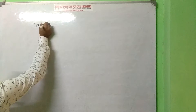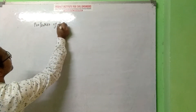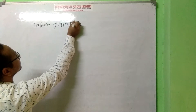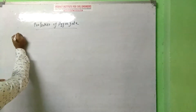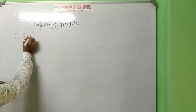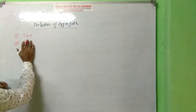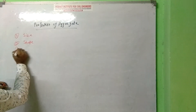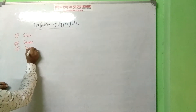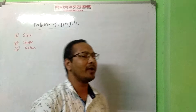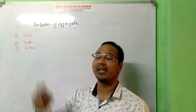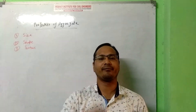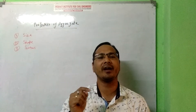Now let's talk about properties of aggregate. We have already discussed properties of aggregate in detail; we will provide a link in the description. Regarding size, the size of aggregate is divided into 3 categories: coarse aggregate, fine aggregate, and all-in-one aggregate.